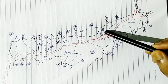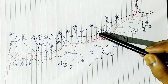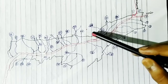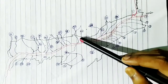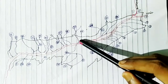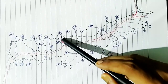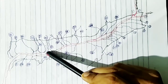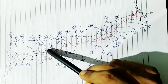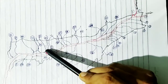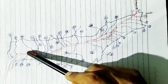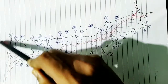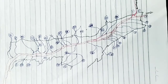The right bank tributaries of the Brahmaputra include Subansiri, Ranganodi, and Dikrong. Further right bank tributaries are: Bornodi, Puthimari, Pagladia, Kaldia, Pohumara, Beki, Manasai, Champa, Gangadhar, and Sankoj. These rivers drain into the Brahmaputra from the right bank side.